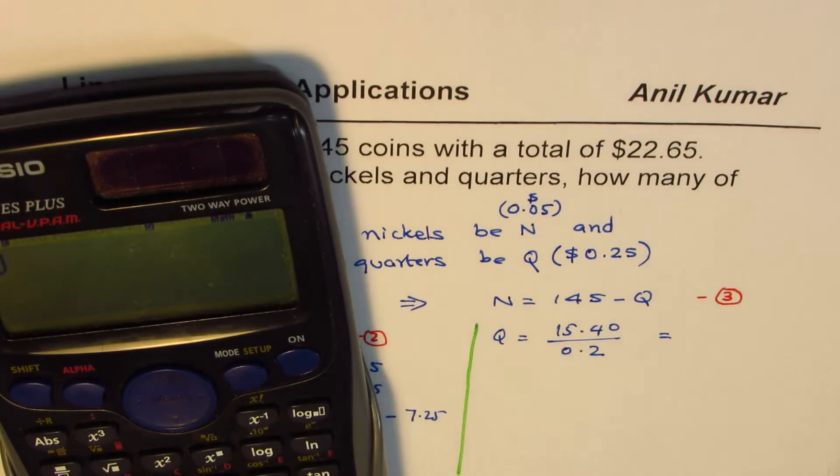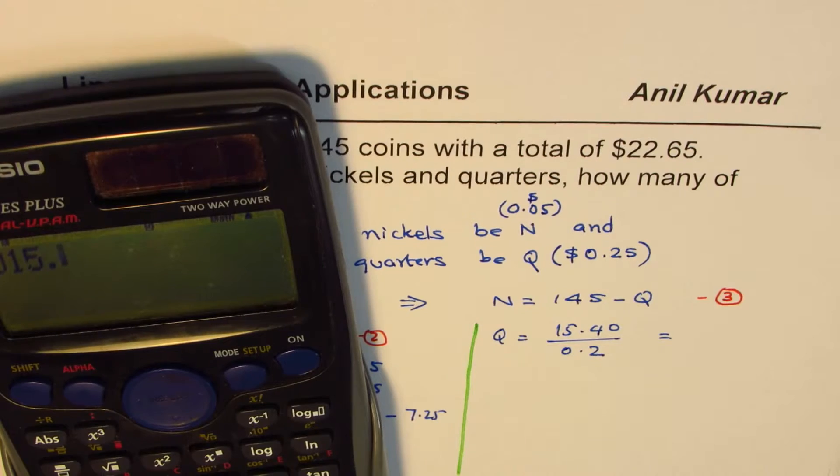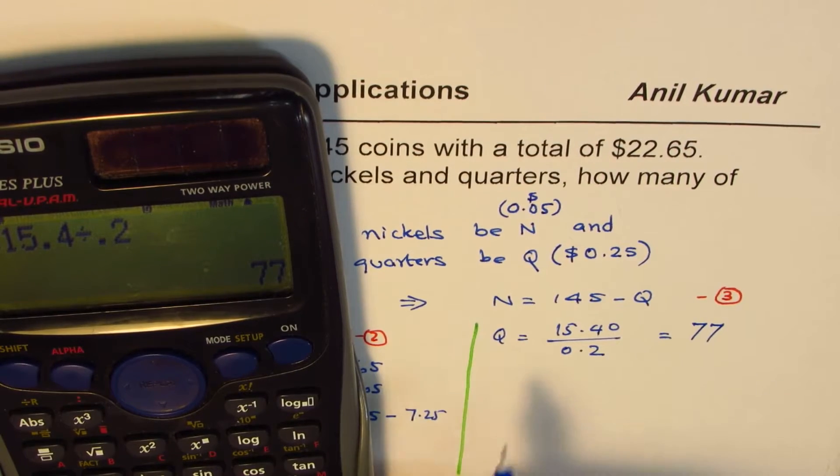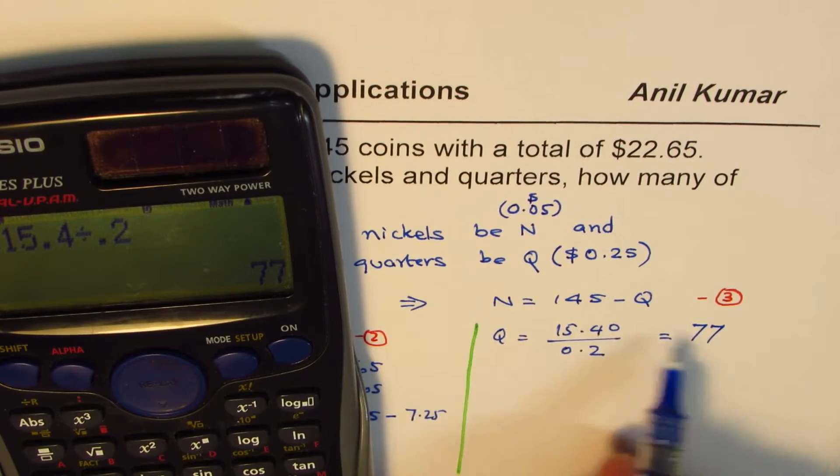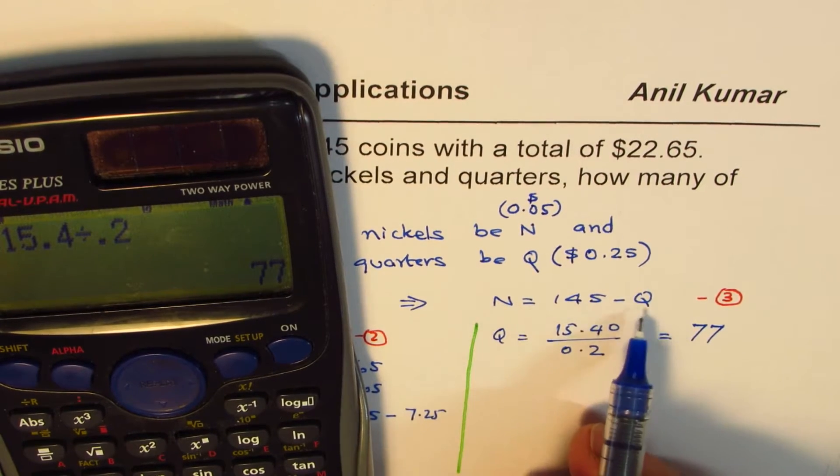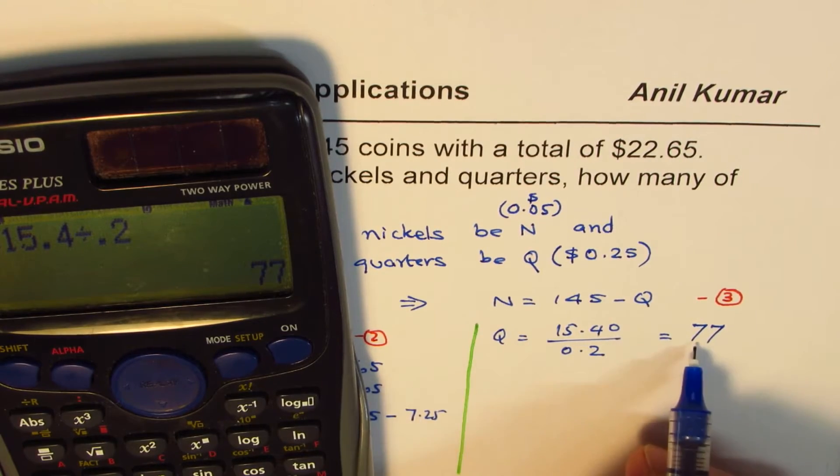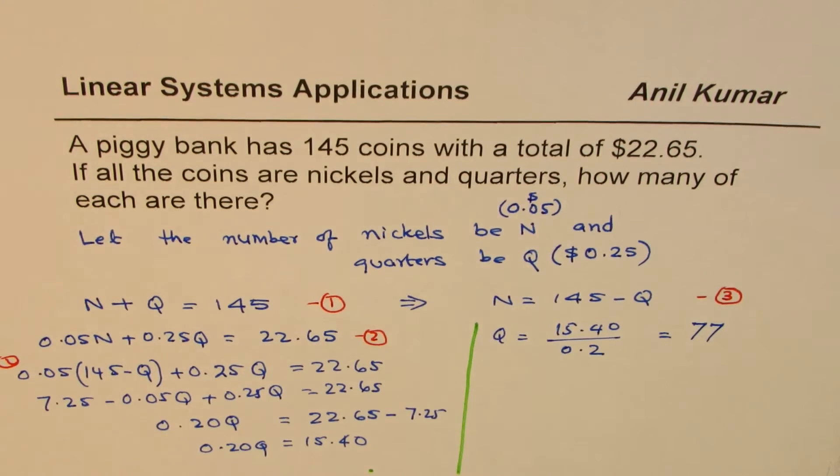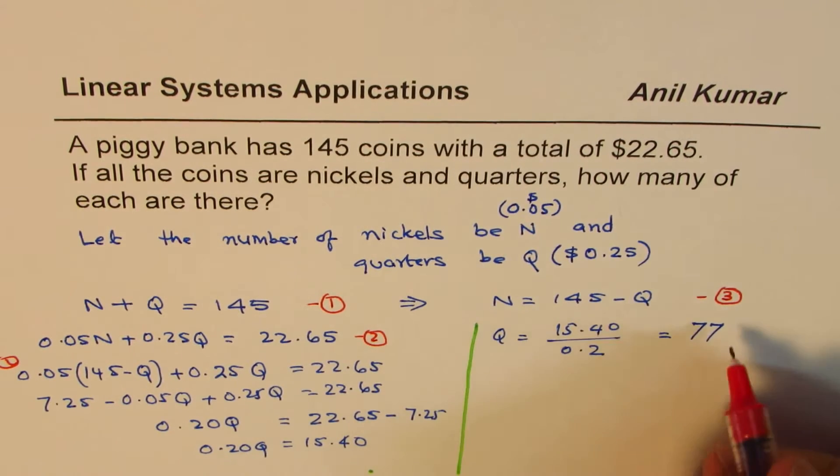So that is, let's do it. So we have 15.4 divided by 0.2, which is 77. So we get 77 quarters. Once we know the number of quarters, we can find the number of nickels by substituting Q in N, the third equation. So let us write down this equation as equation 4.